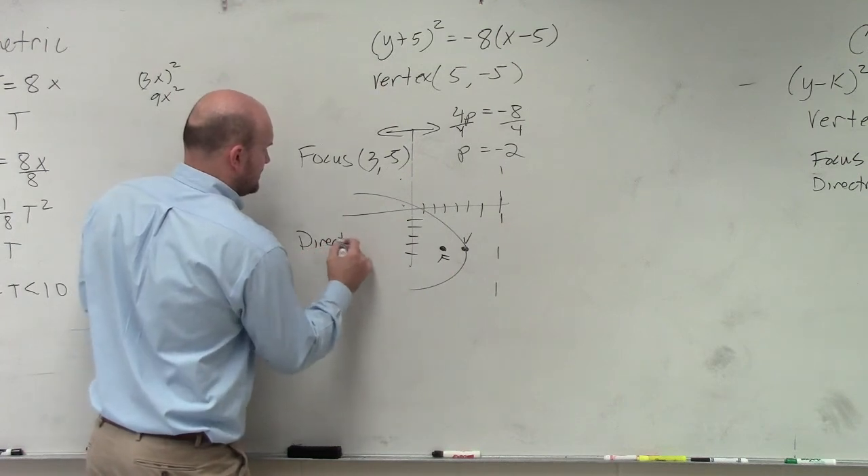So there's your focus and then your directrix is going to be p in the opposite direction. So since it was negative 2 that took us to the left, opposite of negative 2 is positive 2 which is going to take us to the right. And our parabola opens up towards the focus or away from it? Towards. Our directrix is again another vertical line which in this case is x equals 7.